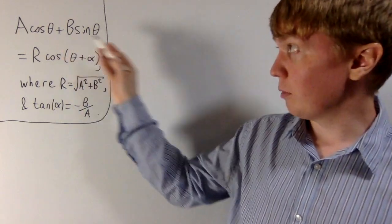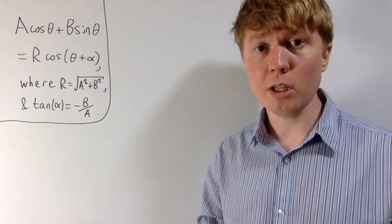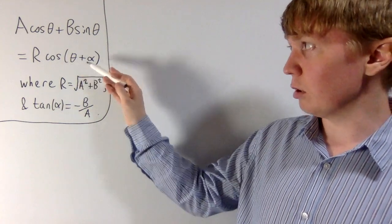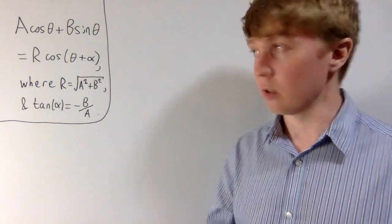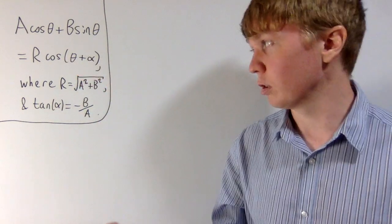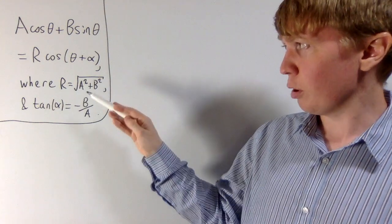If you've got a linear combination of a cosine function and a sine function, it turns out that you can always write these as a single sine or cosine function. So here we've got this set up with a cosine function, and there's a kind of formula that we can follow here.